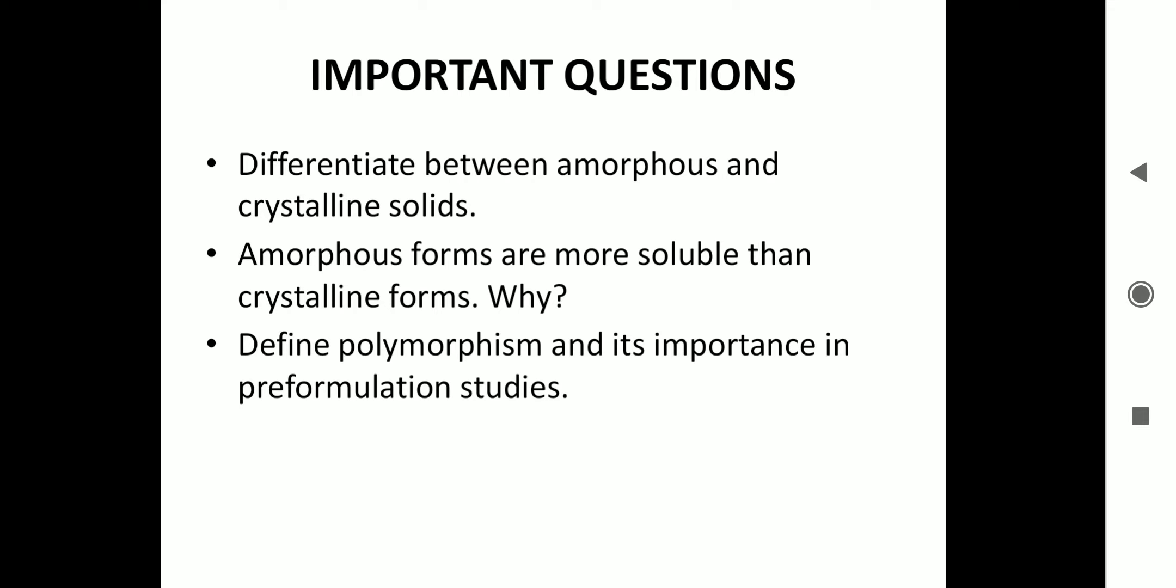Now the important questions. By now we have finished the two important topics, that is physical form and polymorphism. There are three important questions: differentiate between amorphous and crystalline solids, amorphous forms are more soluble than crystalline forms why, define polymorphism and its importance in pre-formulation studies. I think during my lecture I have answered all these three questions. In the coming videos we will discuss some more physical properties which are studied during pre-formulation, followed by the chemical properties. Thank you so much.